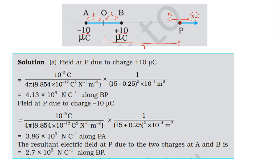Electric field at point P due to positive charge is in the direction of O to B to P direction. The formula is E = (1 / 4πε₀) × Q divided by the distance from B to P squared, where the distance from O to P is R and from B to P is R minus L.